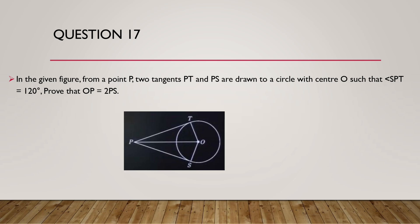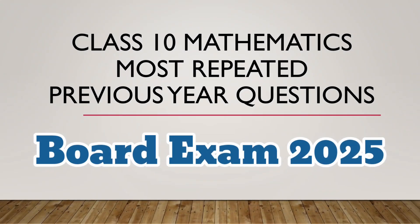Question 17. In the given figure, from a point P, tangents PT and PS are drawn to a circle with center O such that angle SPT equals 120 degrees. Prove that OP equals 2PS.